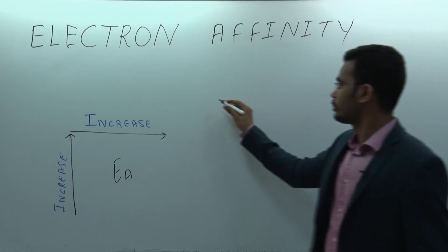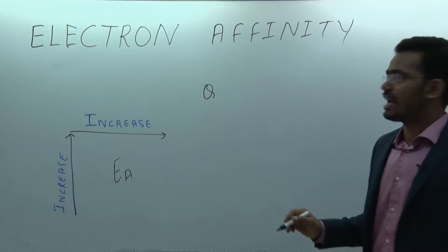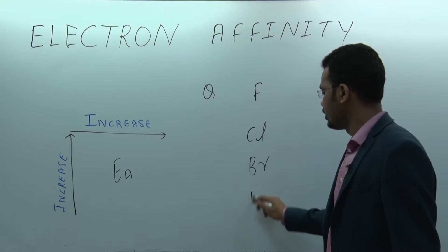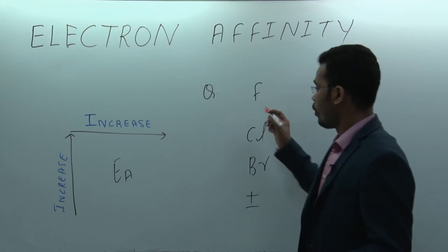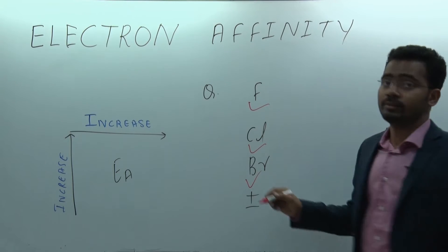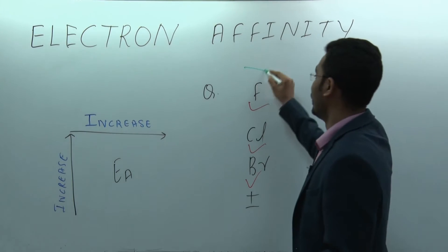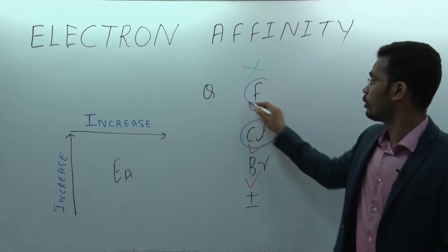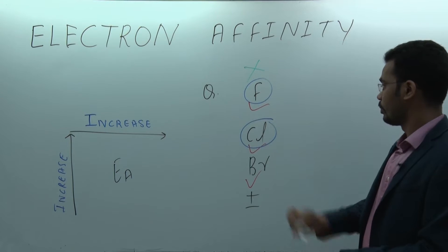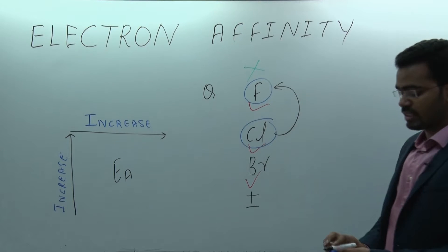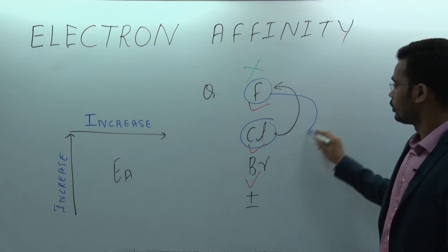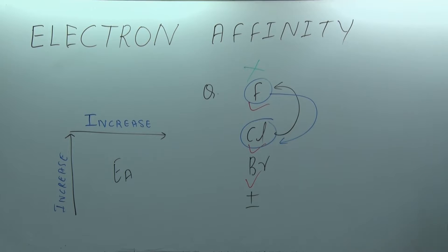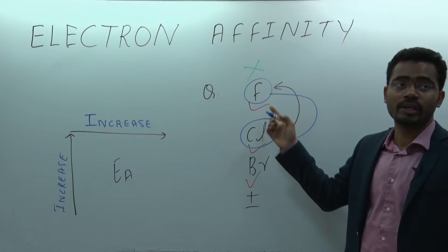Solve this question: what will be the order of electron affinity of fluorine, chlorine, bromine, and iodine? The expected order F > Cl > Br > I is wrong. You have to interchange fluorine and chlorine. Why? Because fluorine is in the second period and chlorine is in the third period.